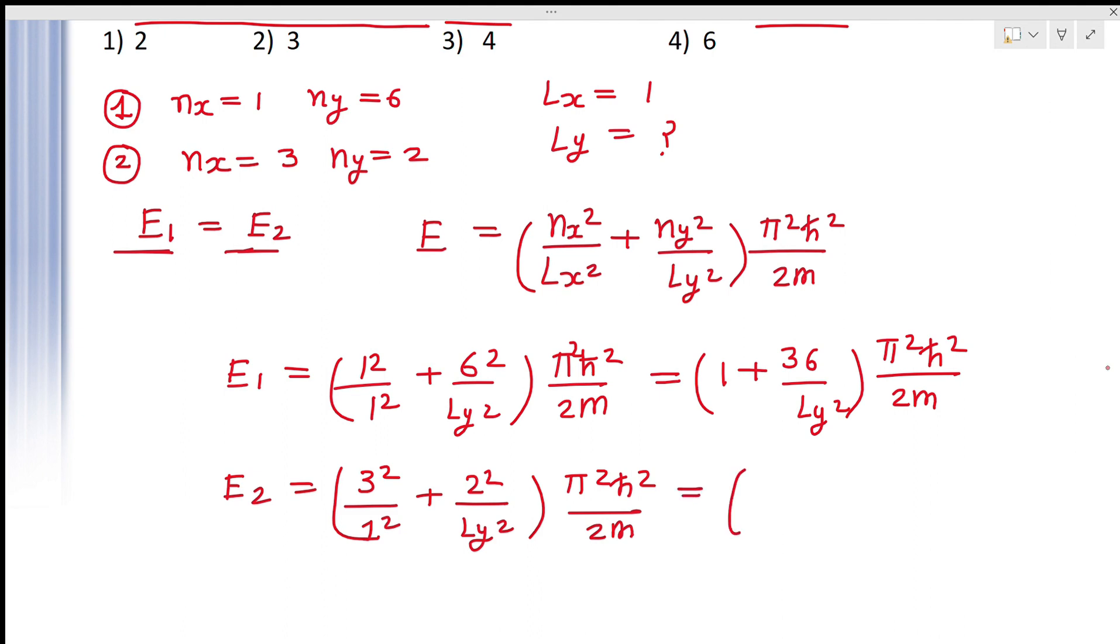Similarly, solve it. This will be equal to 9 upon 1 plus 4 upon LY square, pi square h cross square upon 2m.